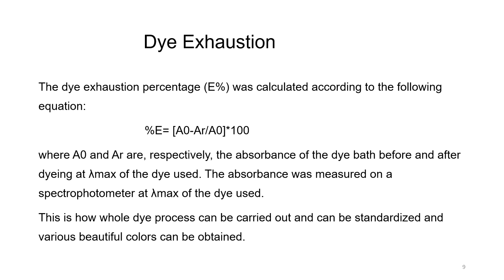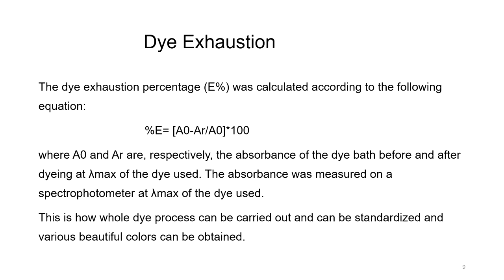Dye exhaustion: the dye exhaustion percentage E% was calculated as: E% = (A₀ − Ar) / A₀ × 100, where A₀ and Ar are the absorbances of the dye bath before and after dyeing at the lambda max of the dye used. The absorbance was measured on a spectrophotometer at lambda max of the dye being used. The lambda max is the maximum absorption wavelength of the dye.